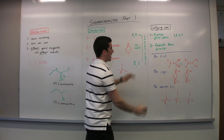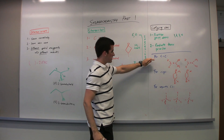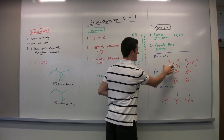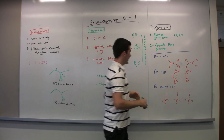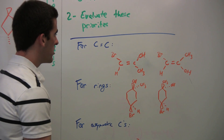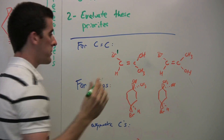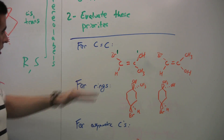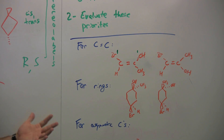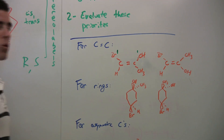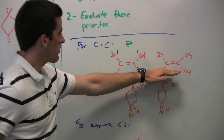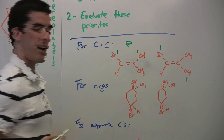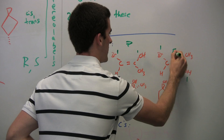Let's go through the double-bonded carbons first. We know you can get E and Z configurations. First we do the prioritizing: on this carbon, bromine is number one — highest atomic number — and on this carbon, the oxygen is number one. Since they're on the same side of the double bond, they get the Z configuration. With the second example, we switch this carbon, so now the number one priority is on opposite sides of the double bond, and we give it the E configuration.